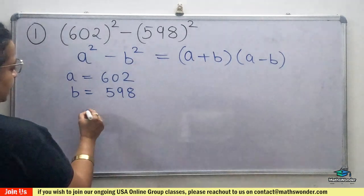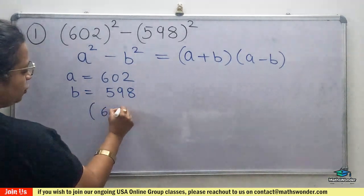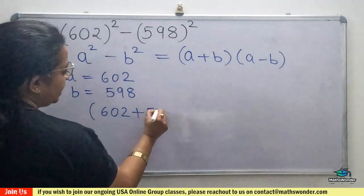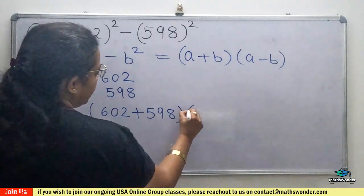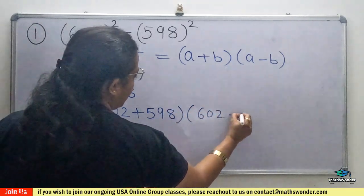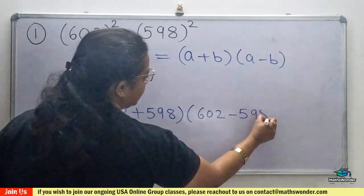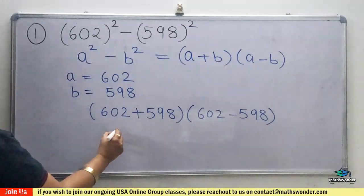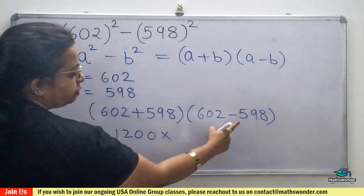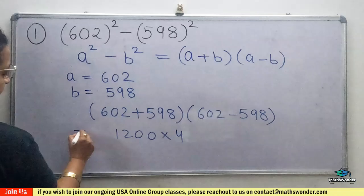When you substitute in this, so this is 602 plus 598 and 602 minus 598. When you add this, you will get 1200, and when you subtract it, you will get 4.